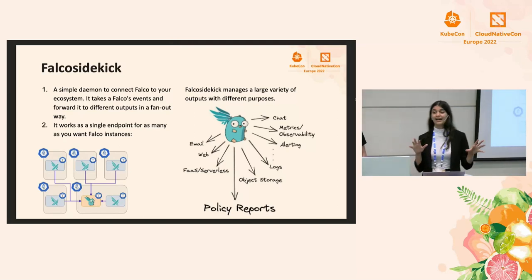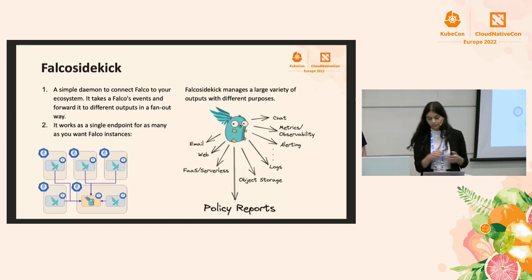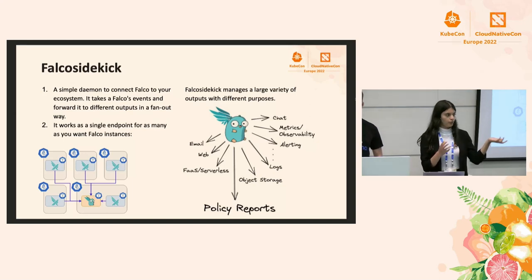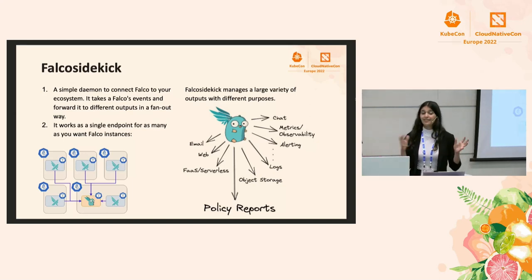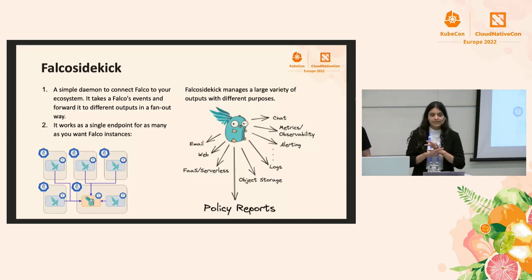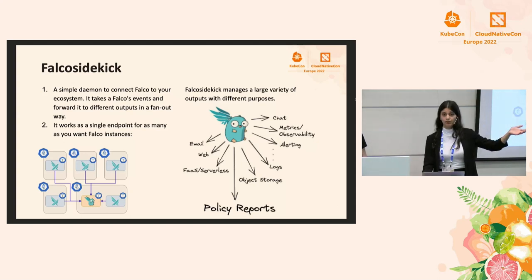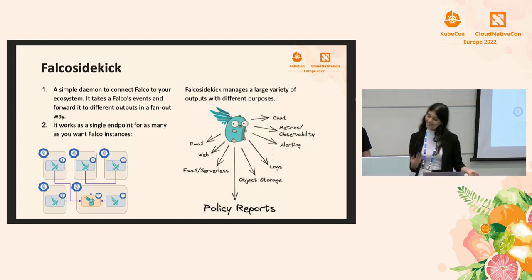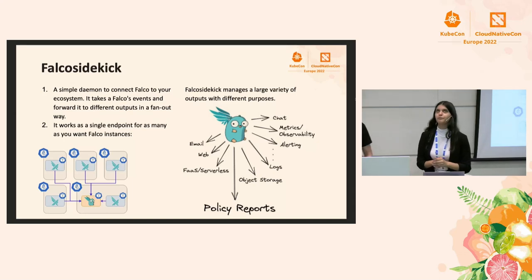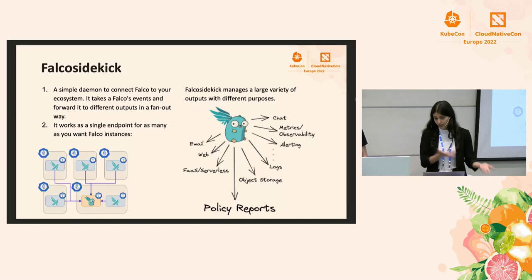Moving on to Falco Sidekick: Falco Sidekick acts as a middleware between Falco and whatever output you need from Falco. Falco gives out five types of outputs. Falco Sidekick takes the HTTP output and sends it forward to whatever type of output you'd want. Policy report is another output to Falco Sidekick, so if you want to use it, you just simply install it and enable it to be true while installing Falco.